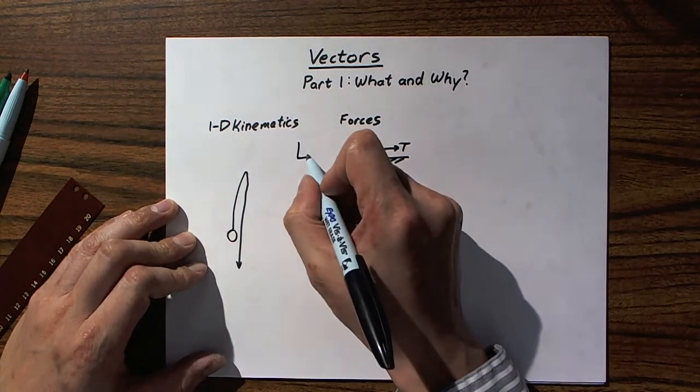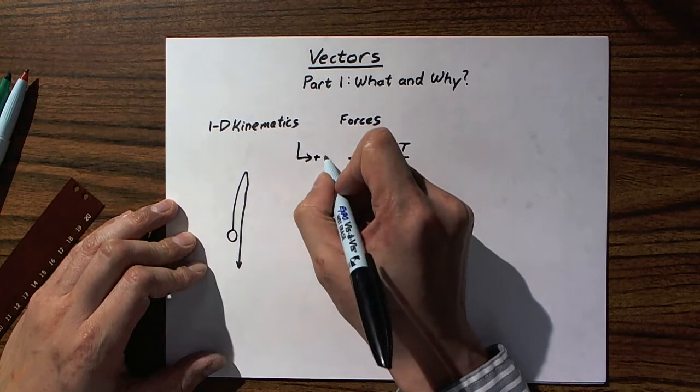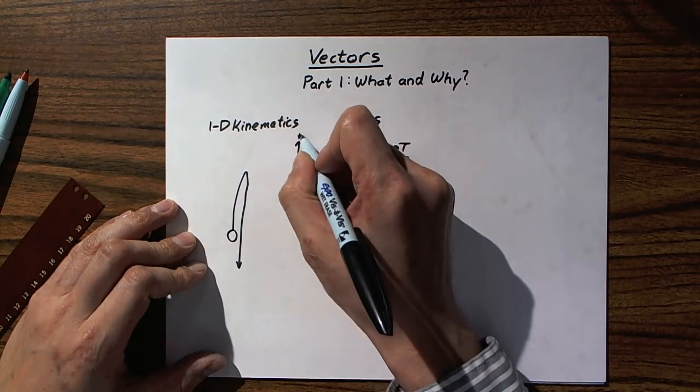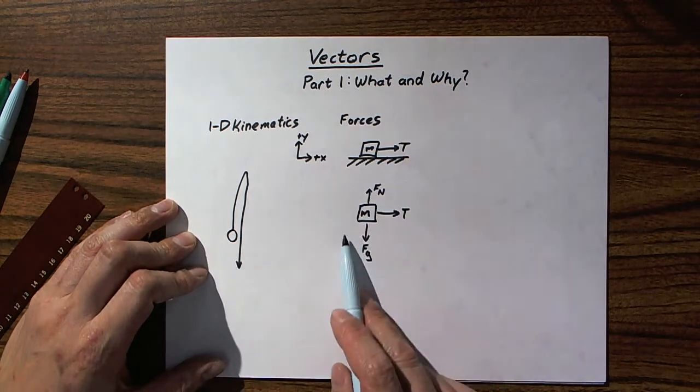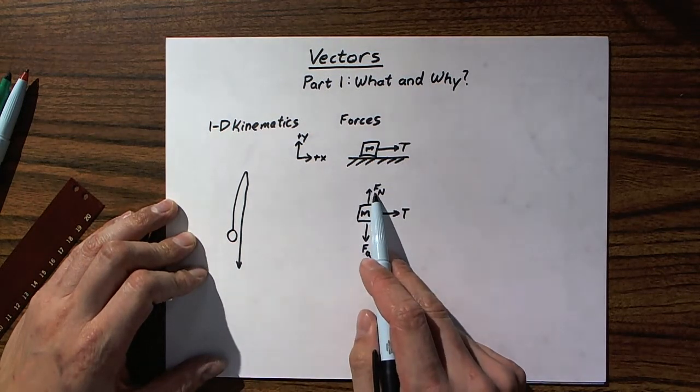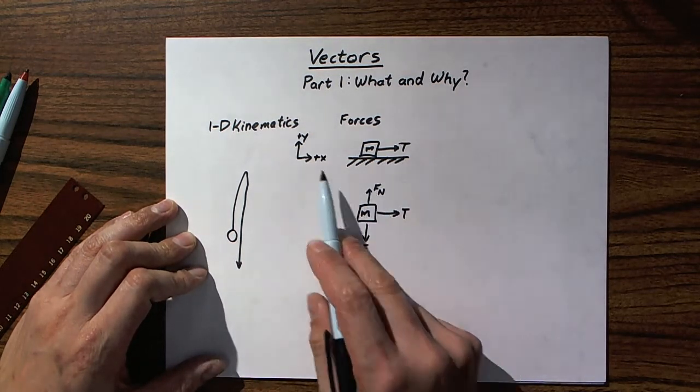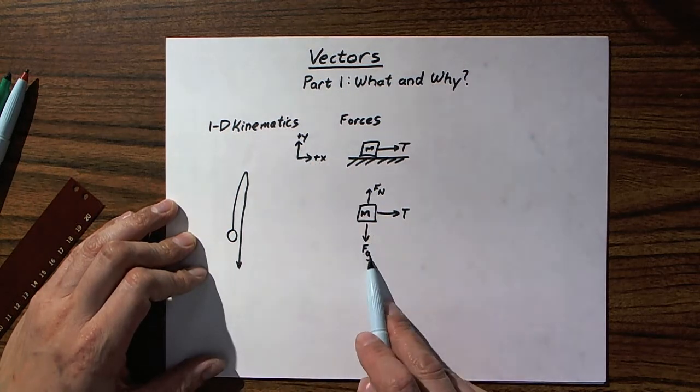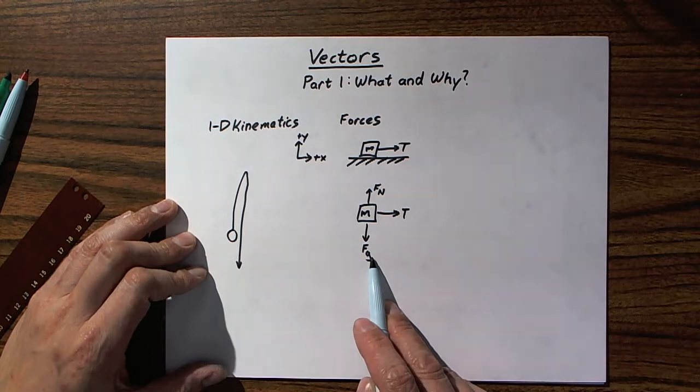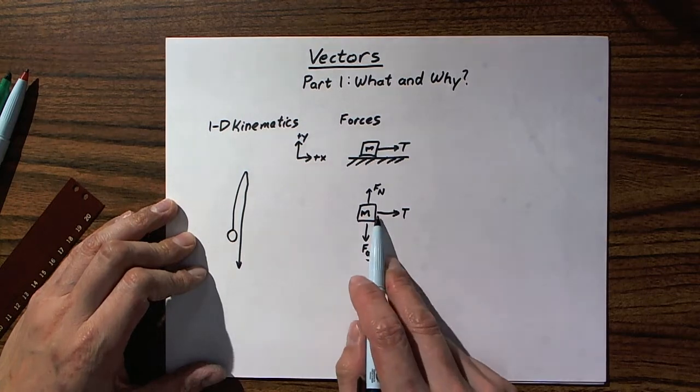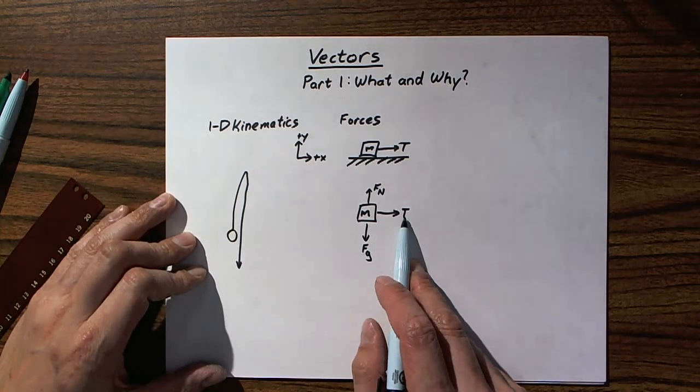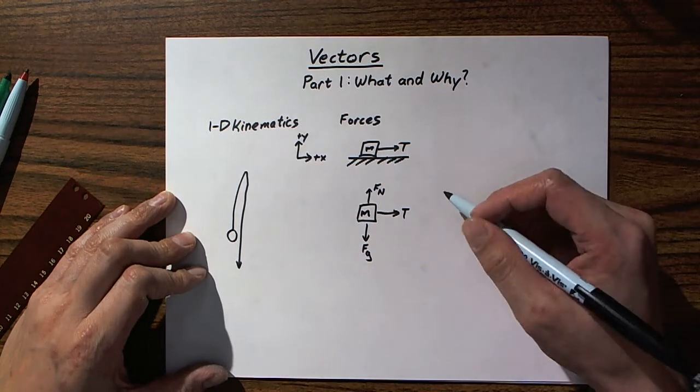Now, if we were to impose a standard system of orientation on this, plus x this way, plus y this way, we could say that this motion occurs only in the y direction, and the normal force occurs only in the plus y direction, the gravity occurs only in the negative y direction, or better way to say it would be that gravity acts only in the negative y direction, and tension acts only in the plus x direction. And this is useful for a number of problems.